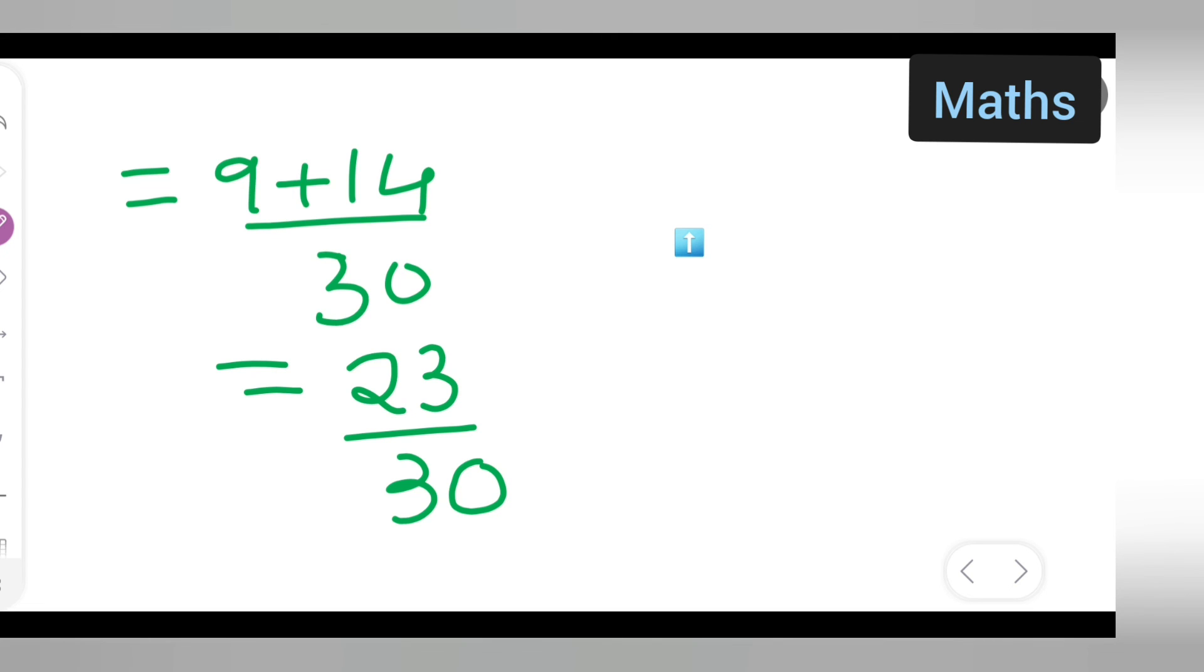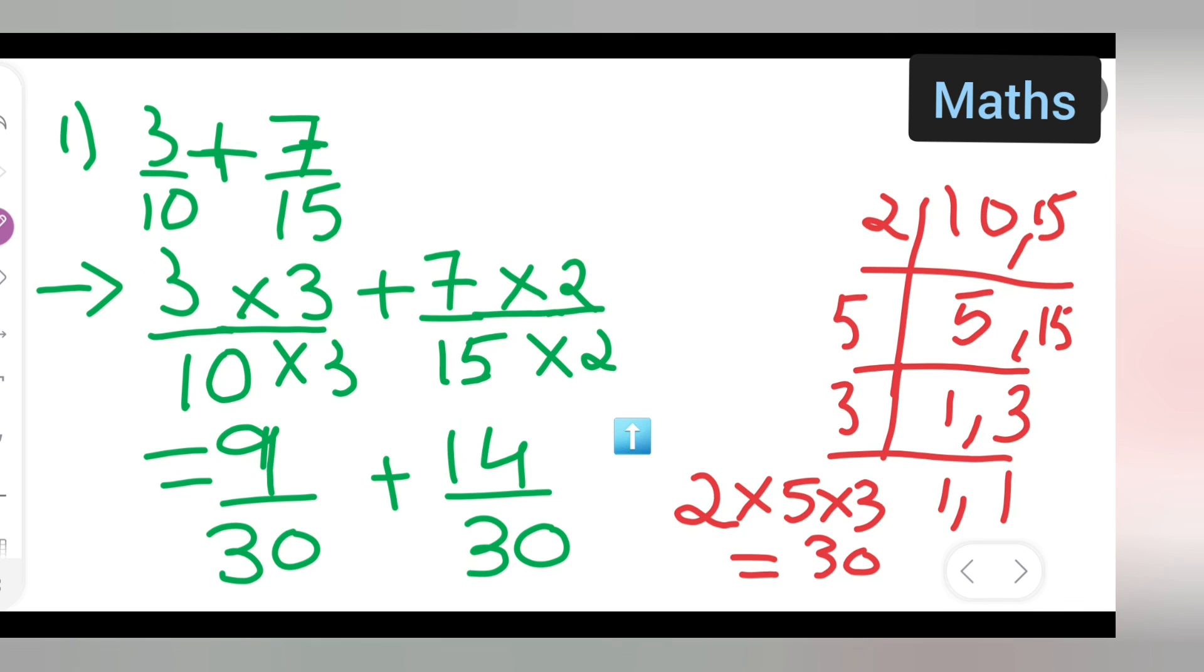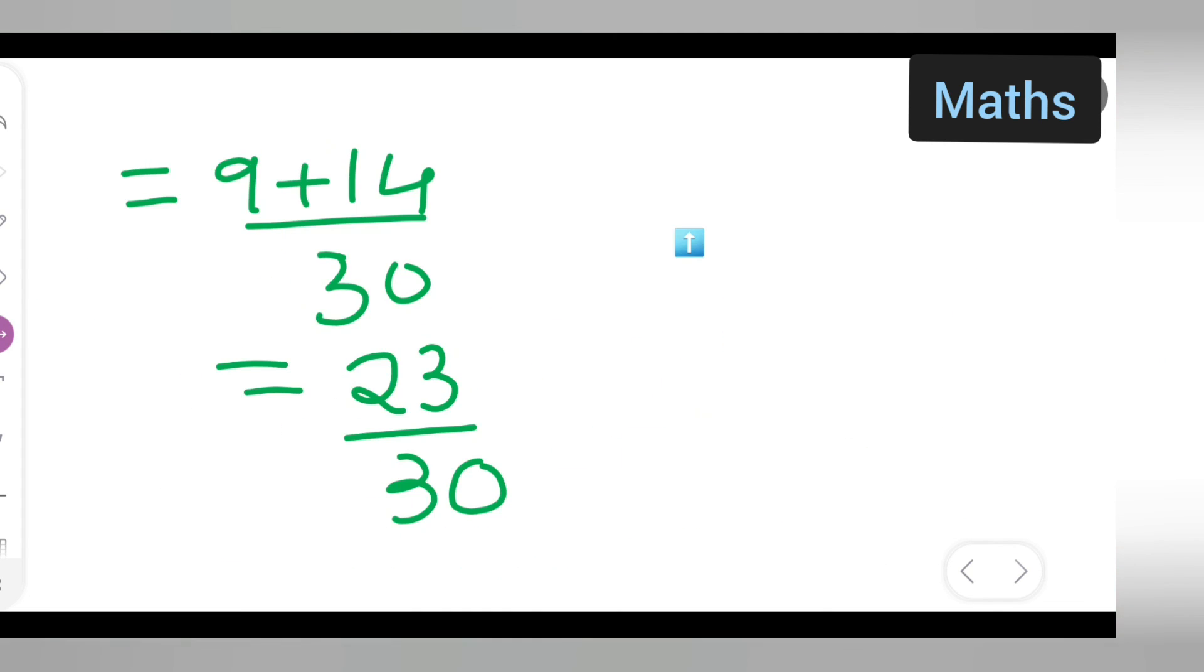So I hope you all have understood how to add, especially when you have two different denominators. Here basically you all are having two different denominators, so it is very difficult to add. So you all take the LCM first. So LCM is 30, so you have to get the denominator to be 30. Once the denominator is equal, you all can add it easily. And here you will get your answer. So I hope you all have understood, and don't forget to like, share, and subscribe, and thanks for watching.